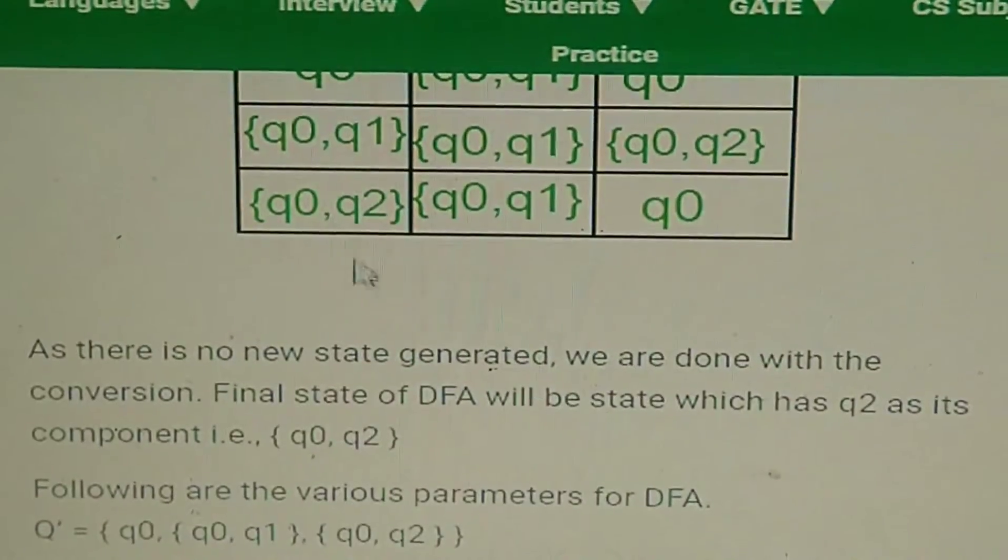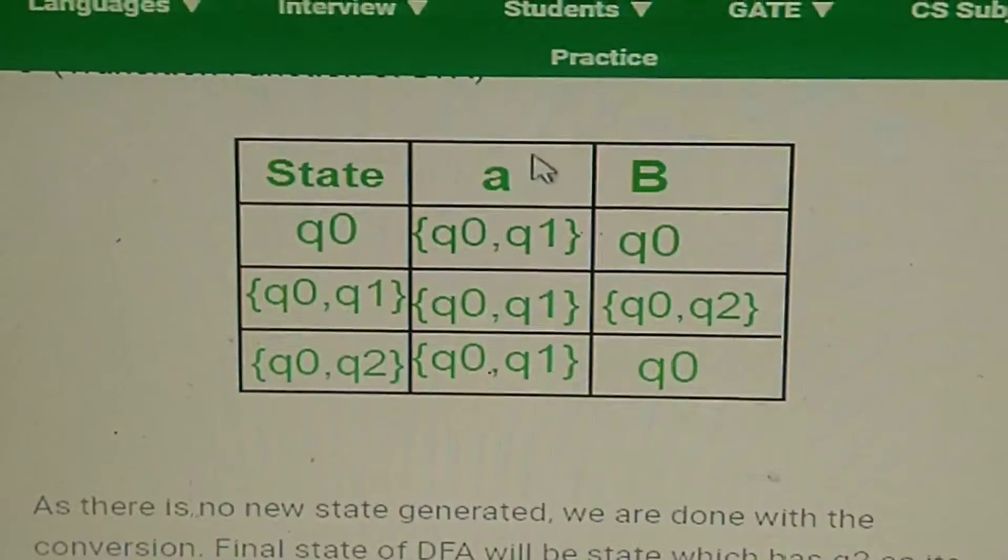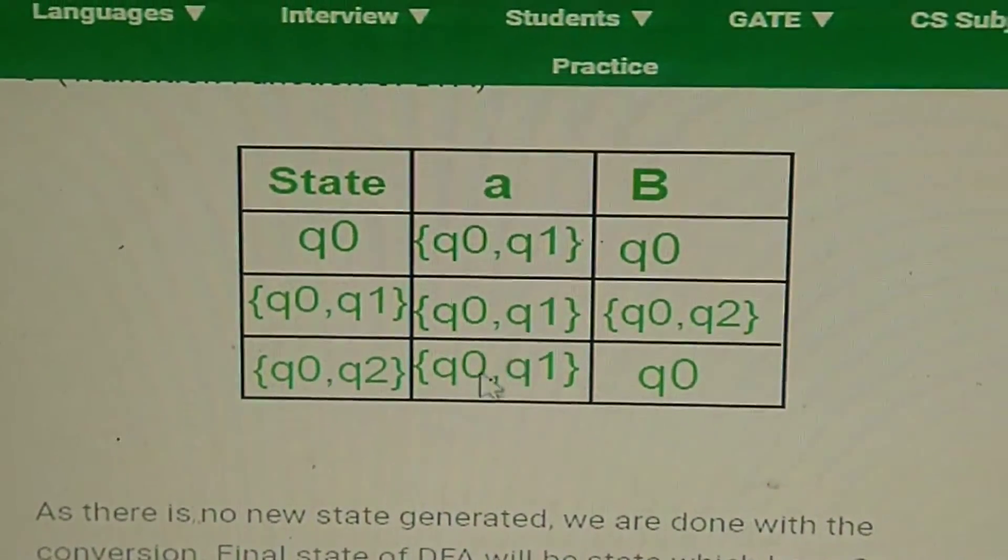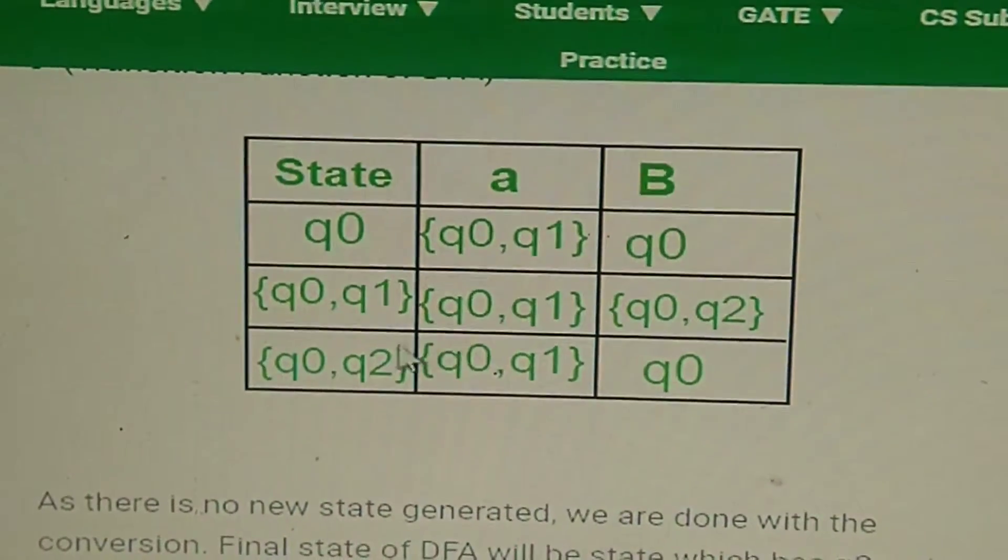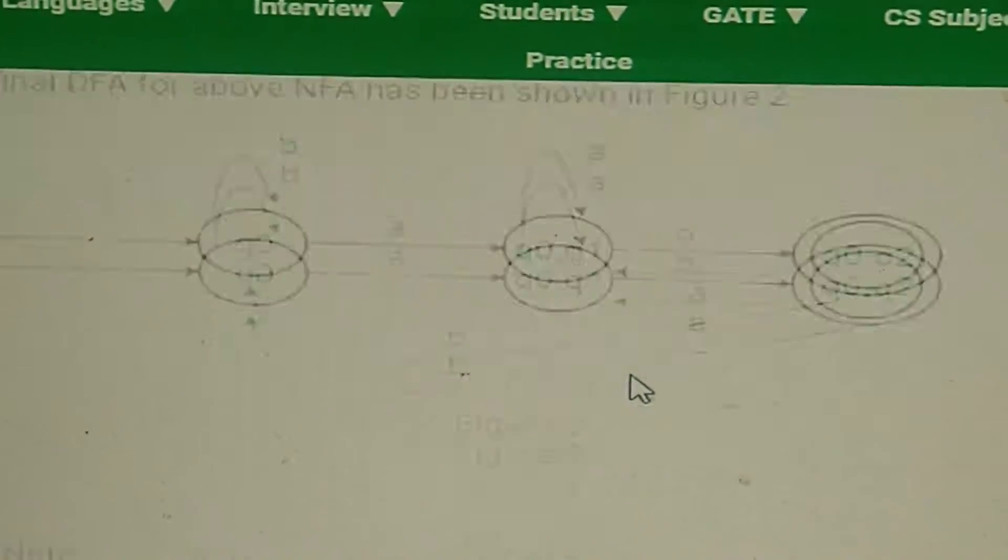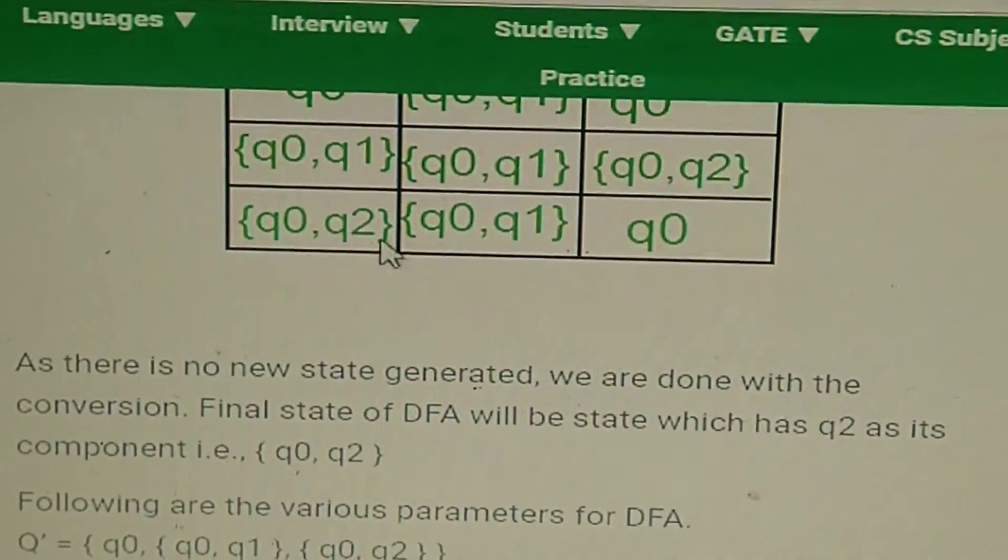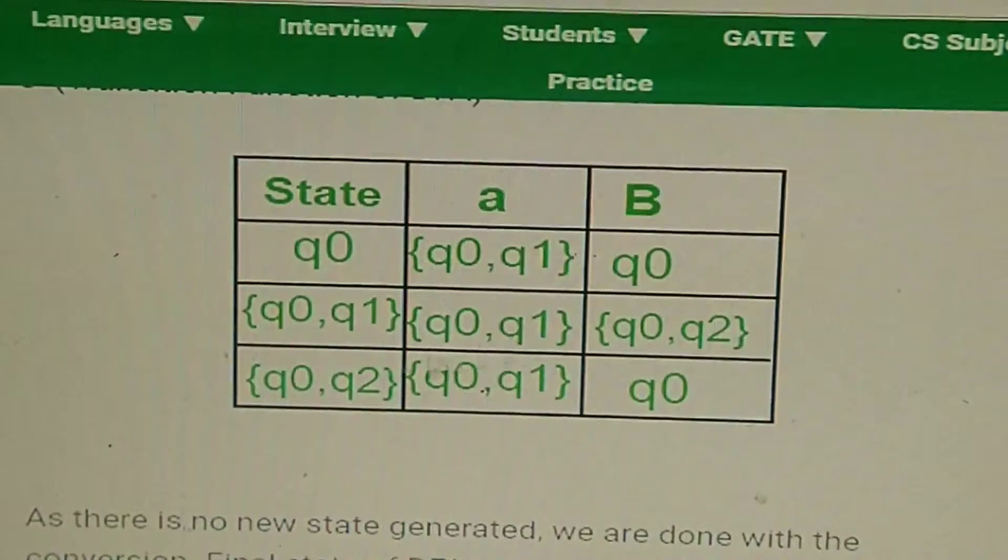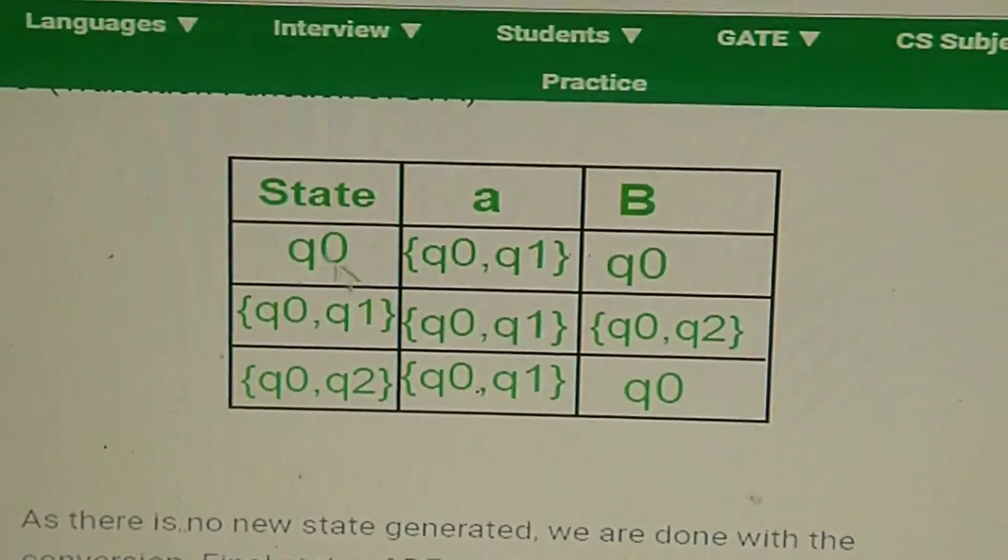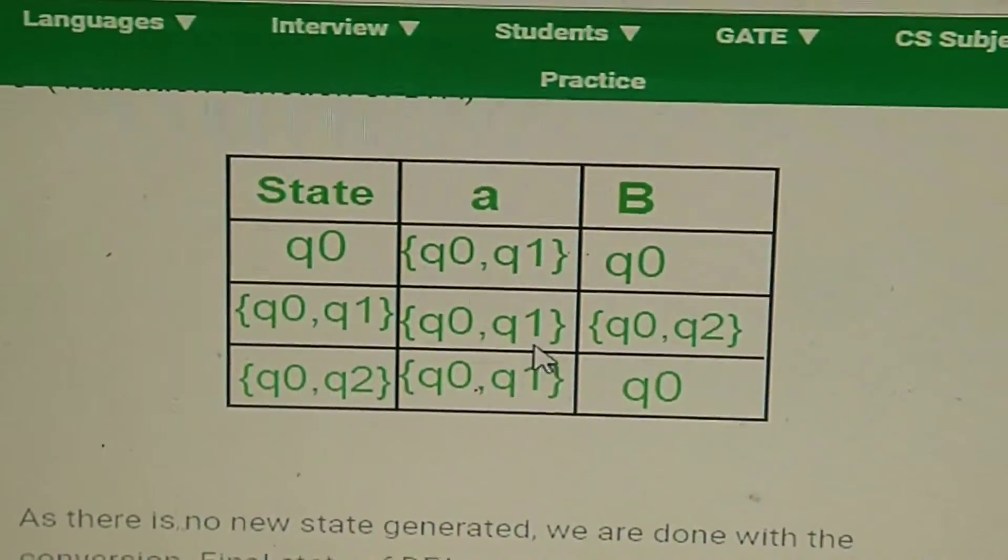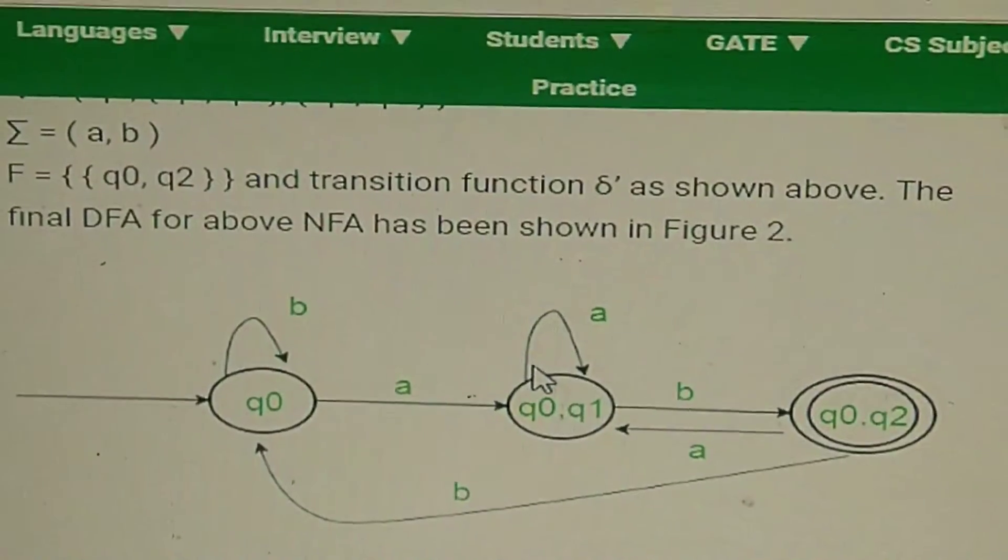Now you need to define q0 and q2. The same process you'll apply. First, you'll give 'a' to q0 and q2, write the union here, then give 'b' to q0 and q2, write the union here. After doing all this, check whether you have got any new state. q0,q2 already defined, q0,q1 already defined, q0 already defined. You need not do any further thing. You haven't got any new state, so your conversion is done.